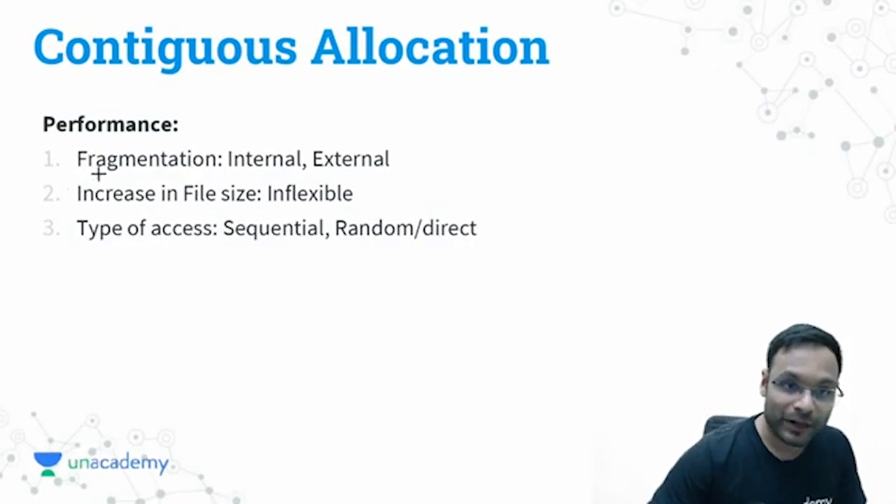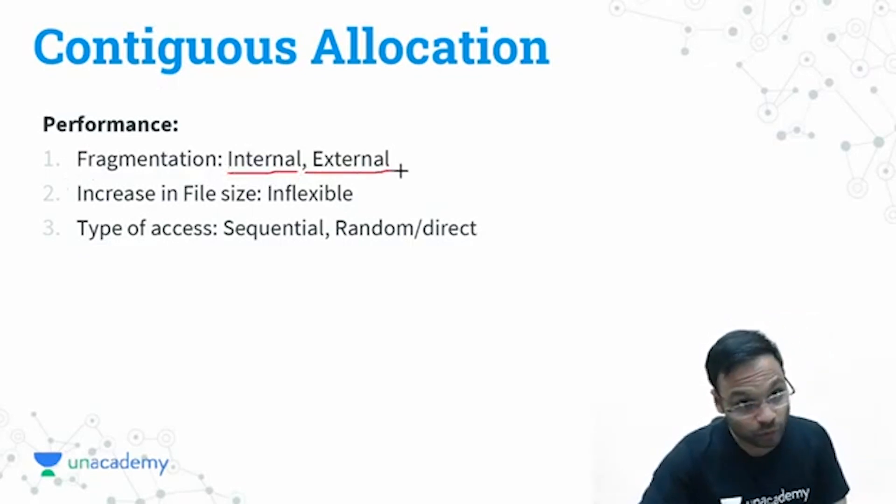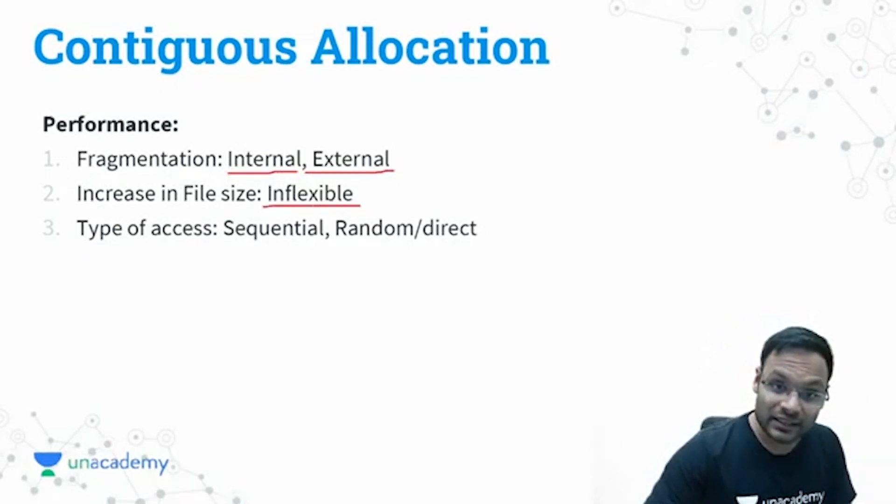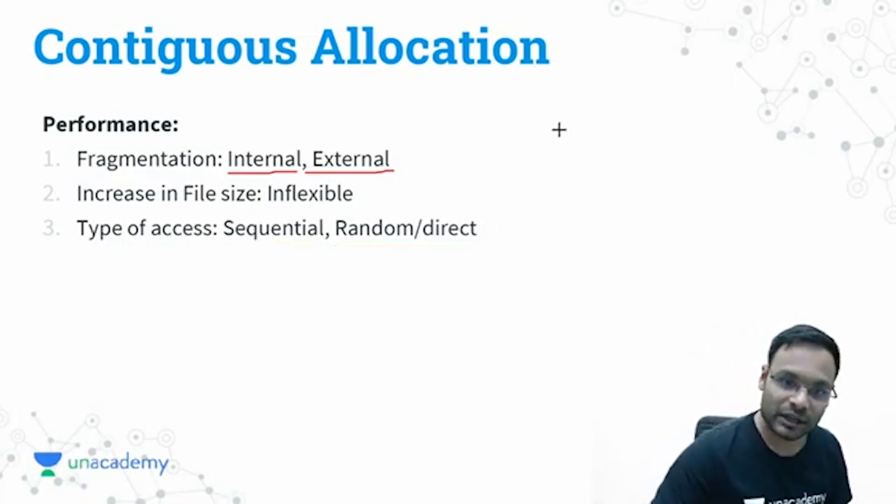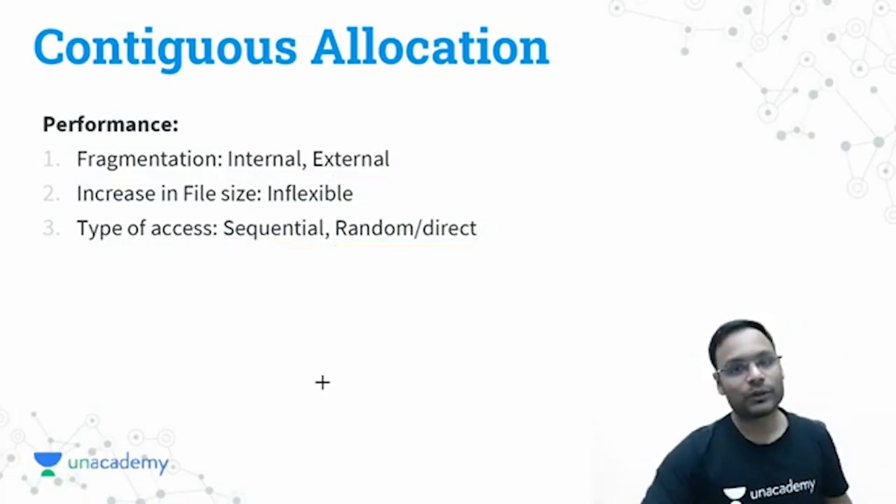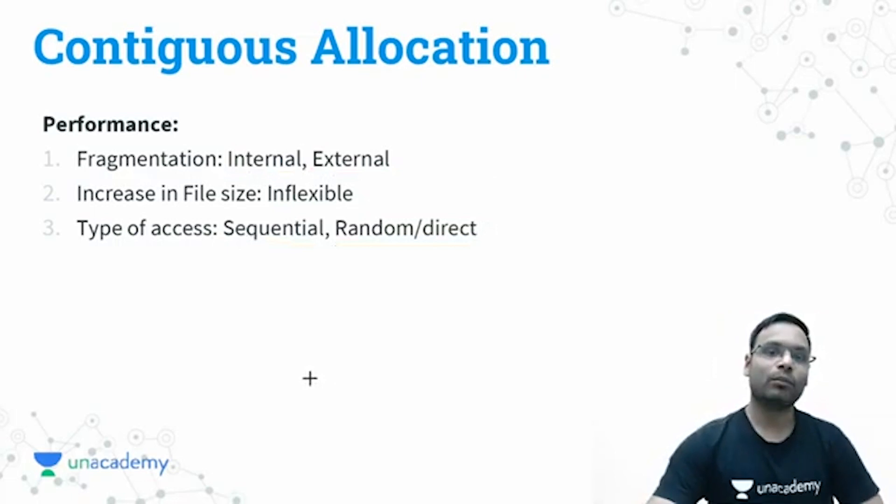Some points I am having here. First of all, fragmentation—in this contiguous allocation you can have internal fragmentation and external fragmentation both. If file size increases, then this method is inflexible. Plus, type of access can be sequential and random both—directly you can access a specific block, and sequentially also you can access the file blocks.